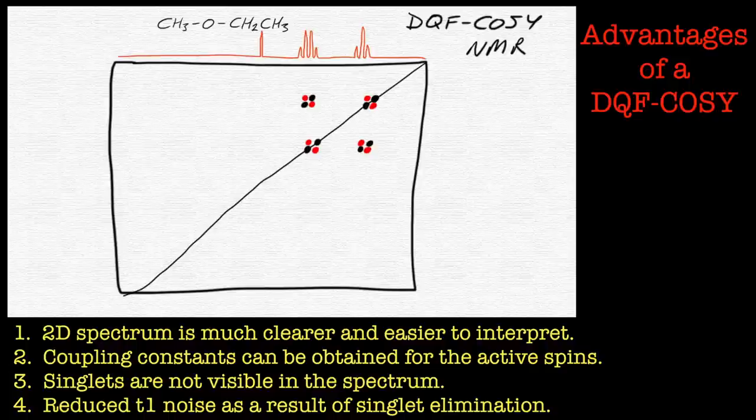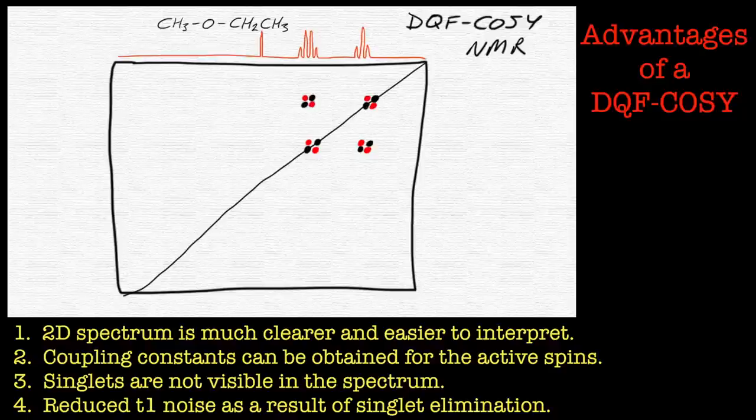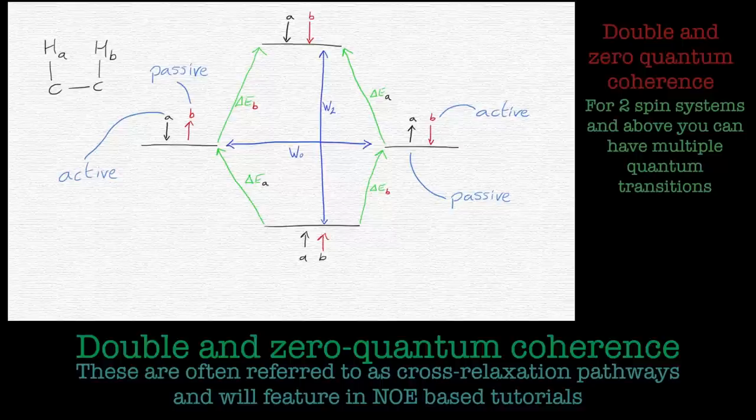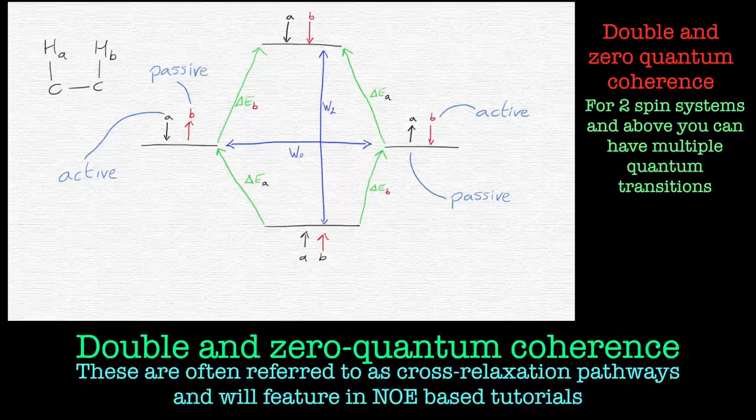So just as a recap, the DQF COSY can make the COSY spectrum look incredibly clean and tidy, and it will enable you to look at cross peaks close to the diagonal, because you get rid of all that dispersion caused by diagonal peaks. We've also looked at the energy level diagram for a two-spin system, which introduces the concept of this double quantum coherence, or these cross relaxation pathways, and single quantum coherence as well. We'll be doing a lot more about that later on.